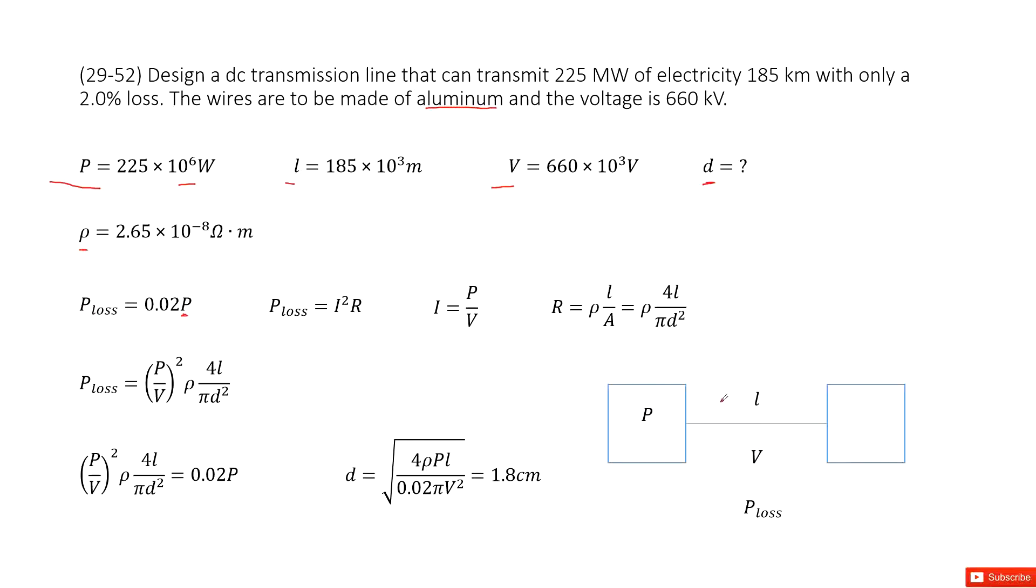So loss power is the power consumed on the cable. And the power consumed on the cable can write as I squared times R, the current squared times R. And this R is just the resistance for the cable.